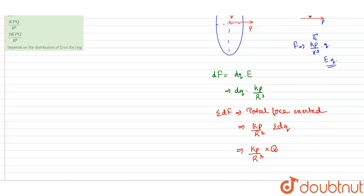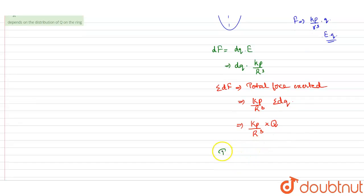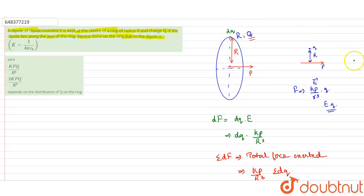So we have the final answer, the total force will be kpq by r cubed. This will be the total force exerted by the dipole on the ring, so it will be option 2.